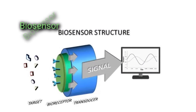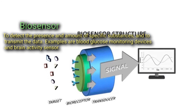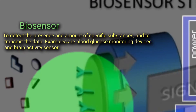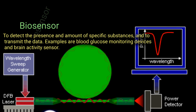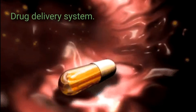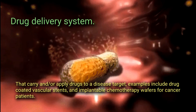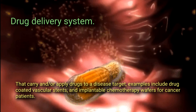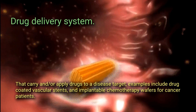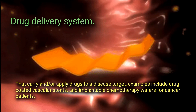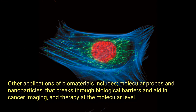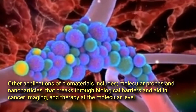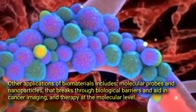Biosensors detect the presence and amount of specific substances and transmit the data; examples include blood glucose monitoring devices and brain activity sensors. Drug delivery systems carry and/or apply drugs to a disease target; examples include drug-coated vascular stents and implantable chemotherapy wafers for cancer patients. Other applications of biomaterials include molecular probes and nanoparticles that break through biological barriers and aid in cancer imaging and therapy at the molecular level.